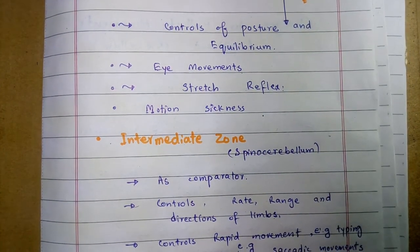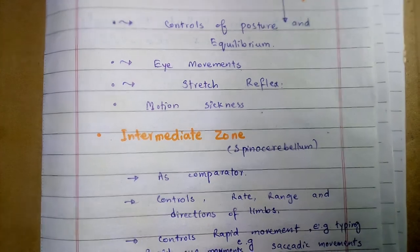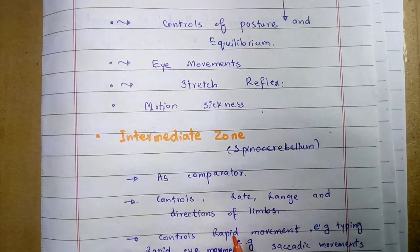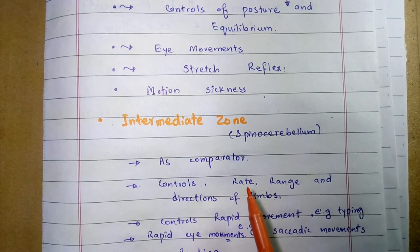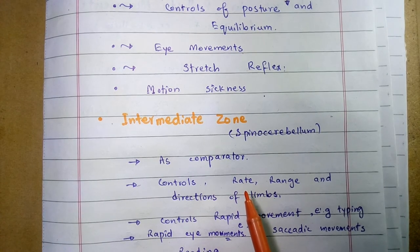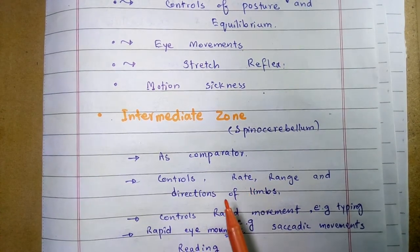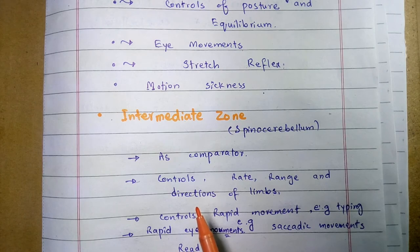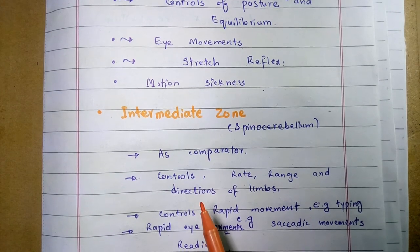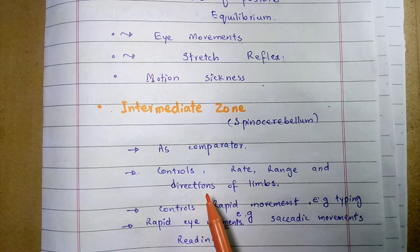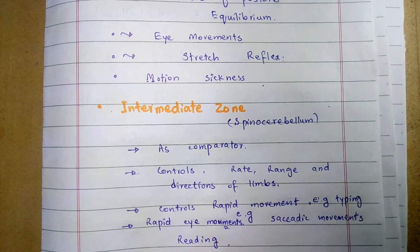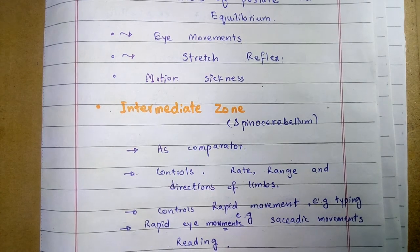The intermediate zone of the cerebellum is also called the spinal cerebellum because it has connections with the spinal cord. It acts as a comparator, comparing the intended plan of movement with the actually performed movements. It controls the rate, range, and direction of limb movements and their coordination.